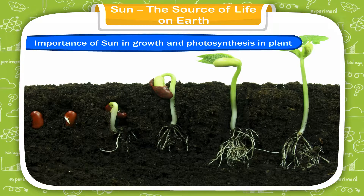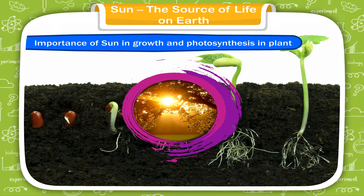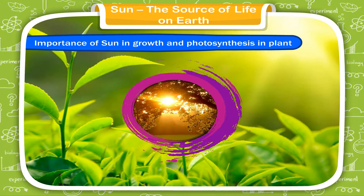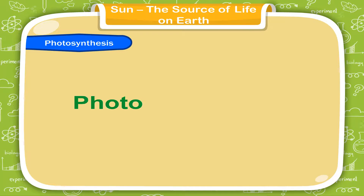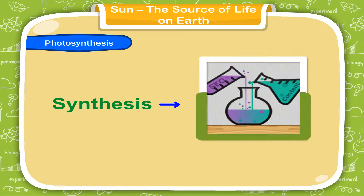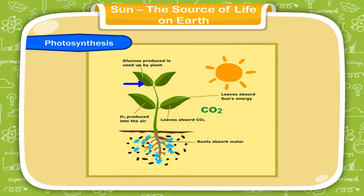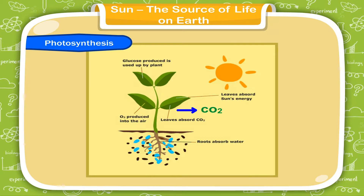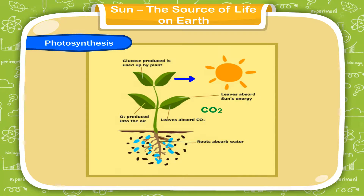Importance of sun in growth and photosynthesis in plants. A seed needs sunlight to grow into a young plant. Photo means light and synthesis means combining together. The green leaves of the plants combine carbon dioxide and water in the presence of sunlight to make food.